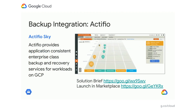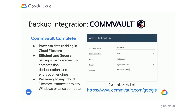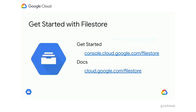I'm going to wrap up the Filestore section by briefly covering a couple of backup partner integrations. The first is Actifio Sky, which provides application-consistent backup and recovery. And then there's Commvault, which is designed to protect data residing in Cloud Filestore and many other environments. Commvault enables efficient and secure backups via compression, deduplication, and encryption engines, and enables recovery to any Cloud Filestore instance, or you can even restore your data directly to Windows computers.